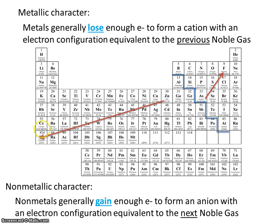Francium has the most metallic character, and fluorine has the most non-metallic character. Francium tends to lose electrons so greatly because it has so many shields. Even though effective nuclear charge increases, so does shielding, and shielding is more important. With francium having all these shields, it's not able to hang on to its valence electron very easily, and it tends to lose it.